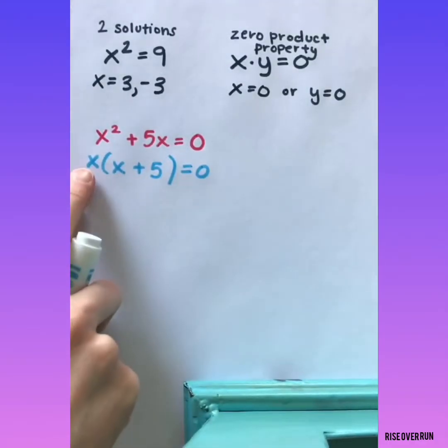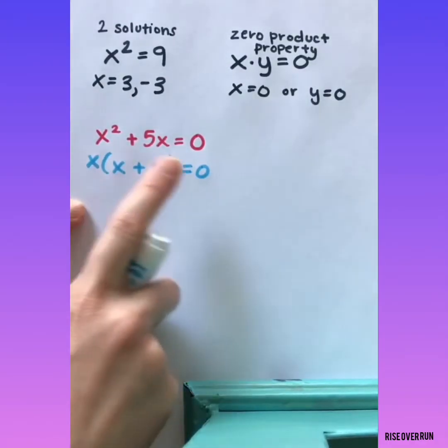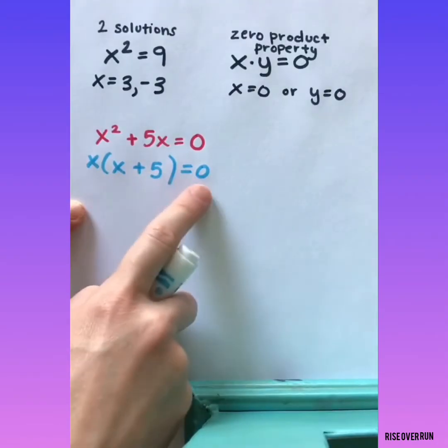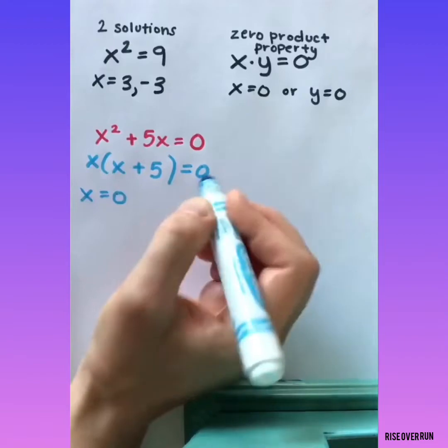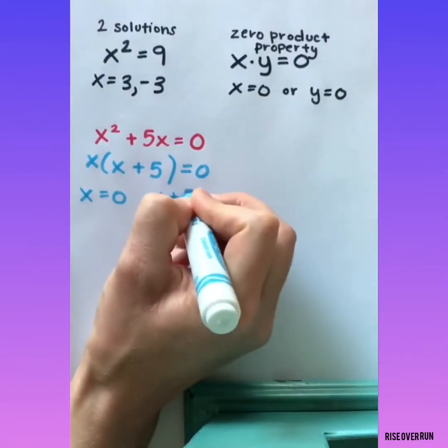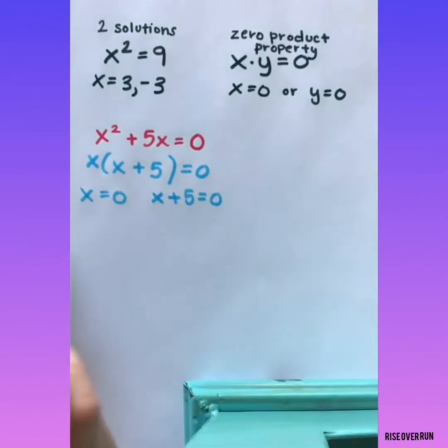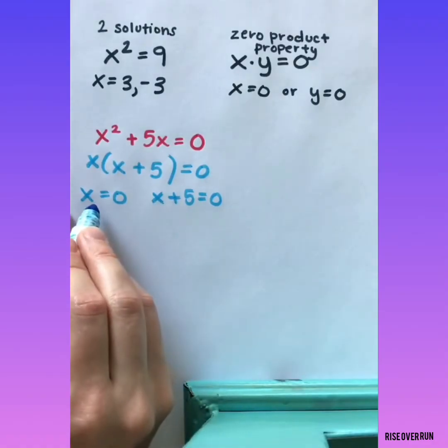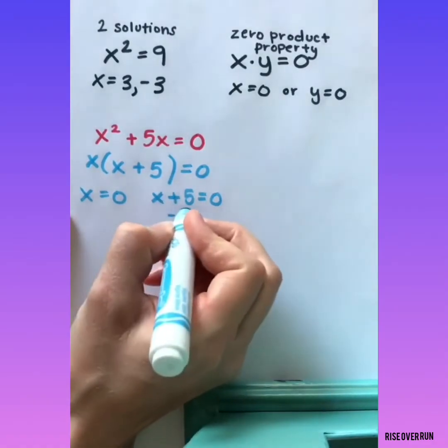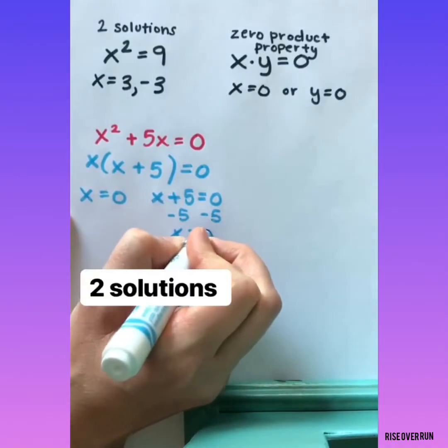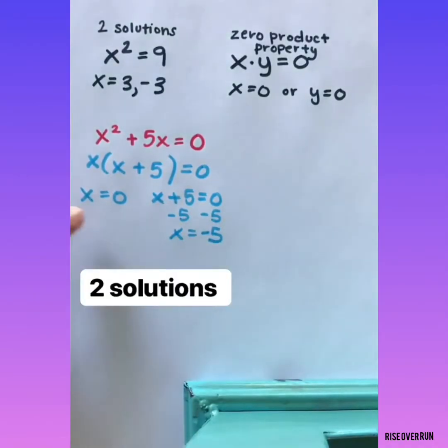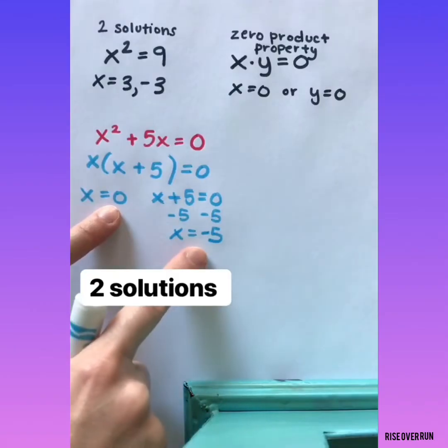Now using the zero product property, I know that either x equals 0 or x plus 5 equals 0. This is how I'll find my two solutions. This one's already solved. This one needs a little work. My two solutions are 0 and negative 5.